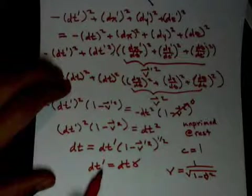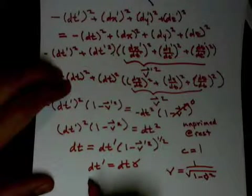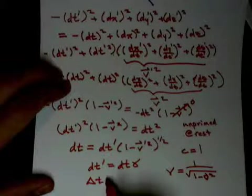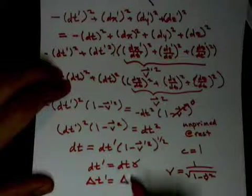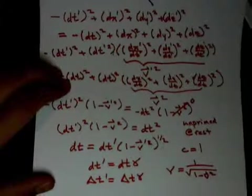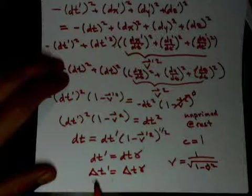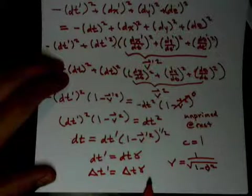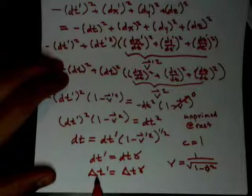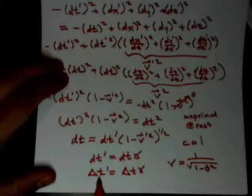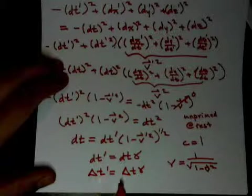And this doesn't have to be just a differential change. This could be just your delta T prime. That's it. Could just be. It doesn't have to be a differential change. This could be. And that's why they say a moving clock runs slower than a clock at rest by a factor of gamma.